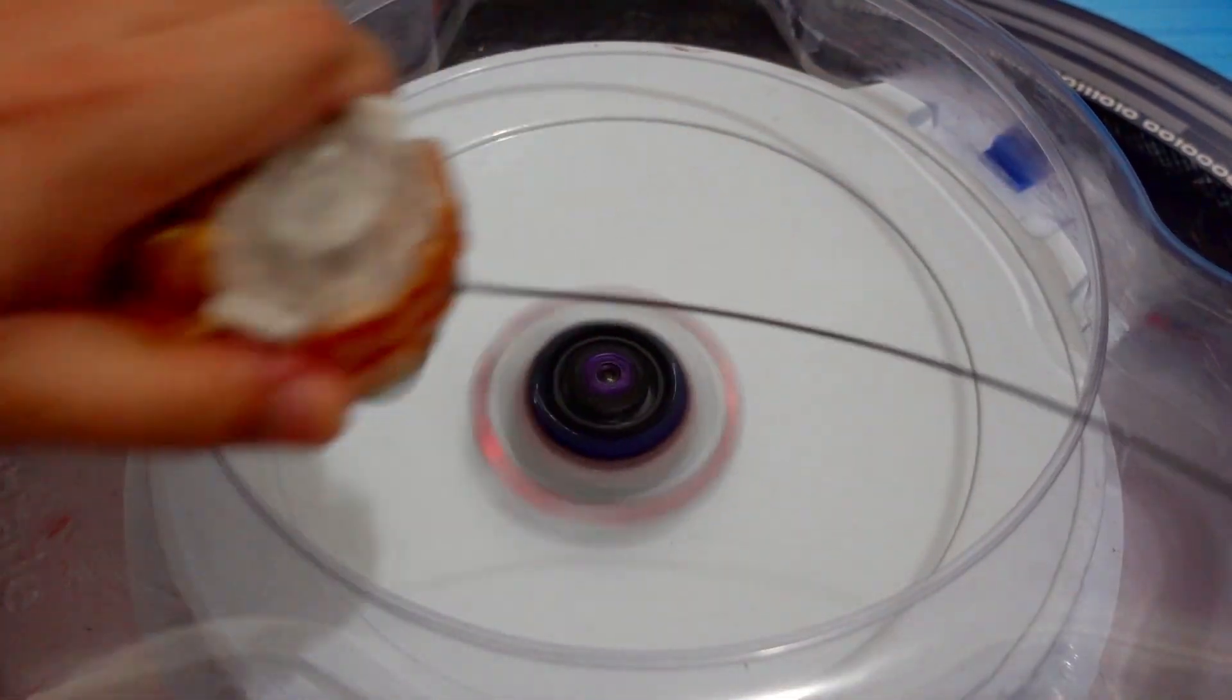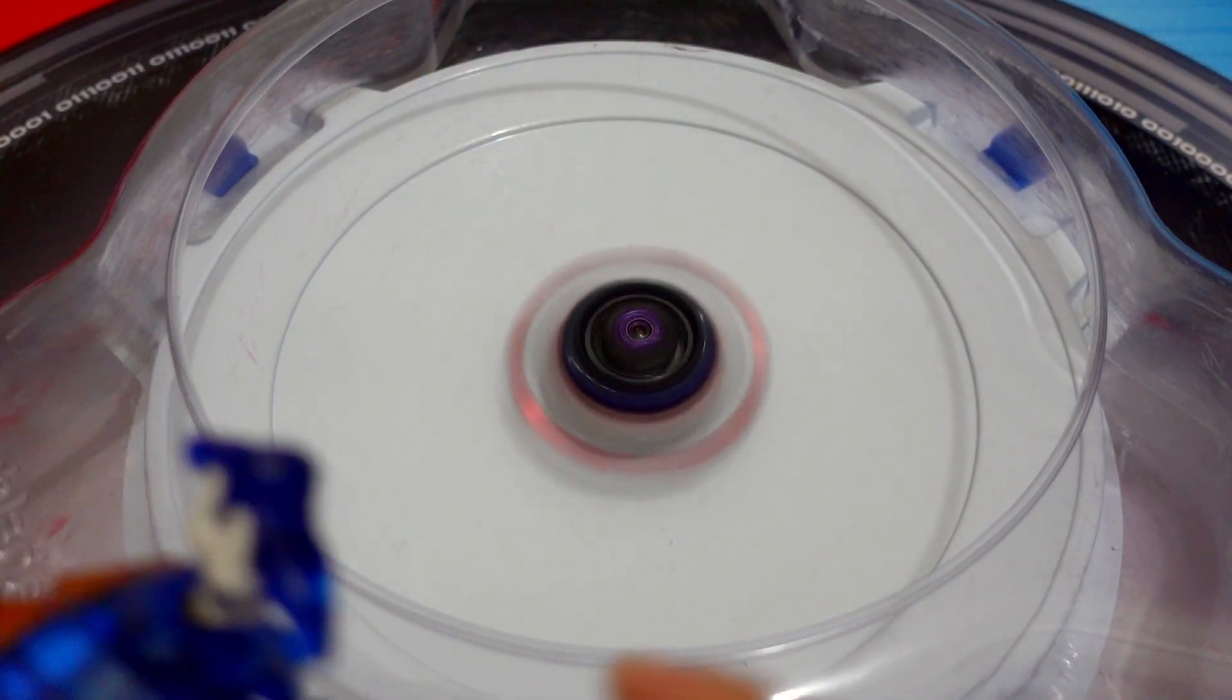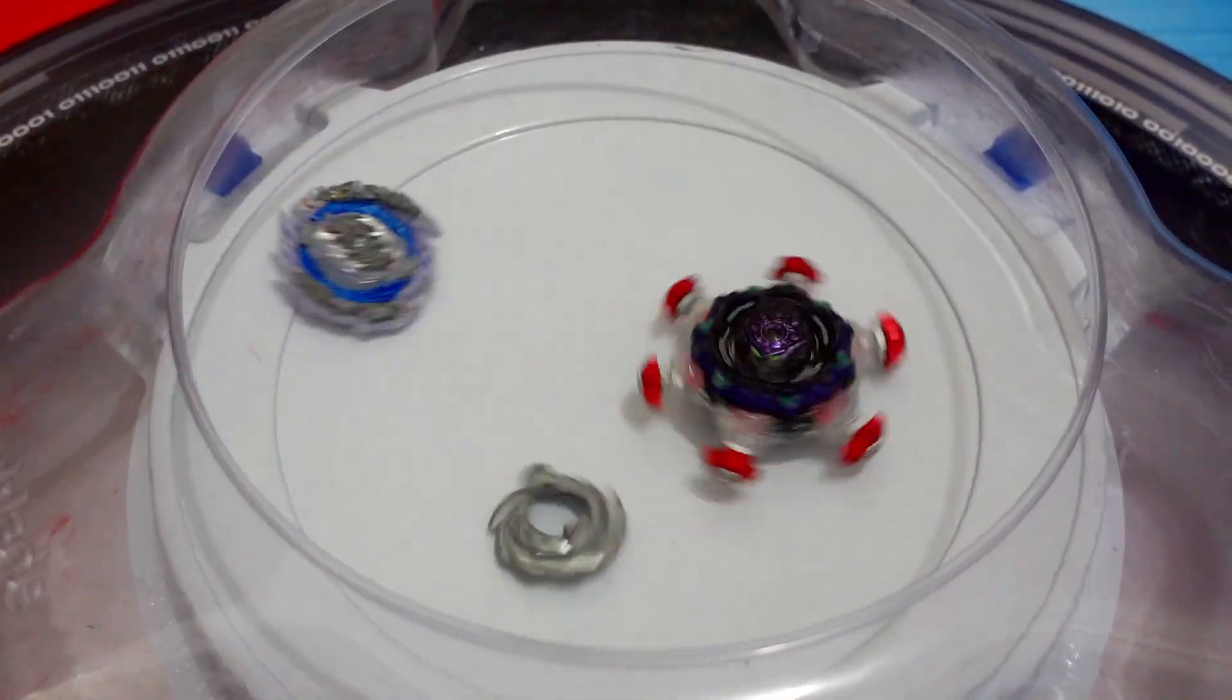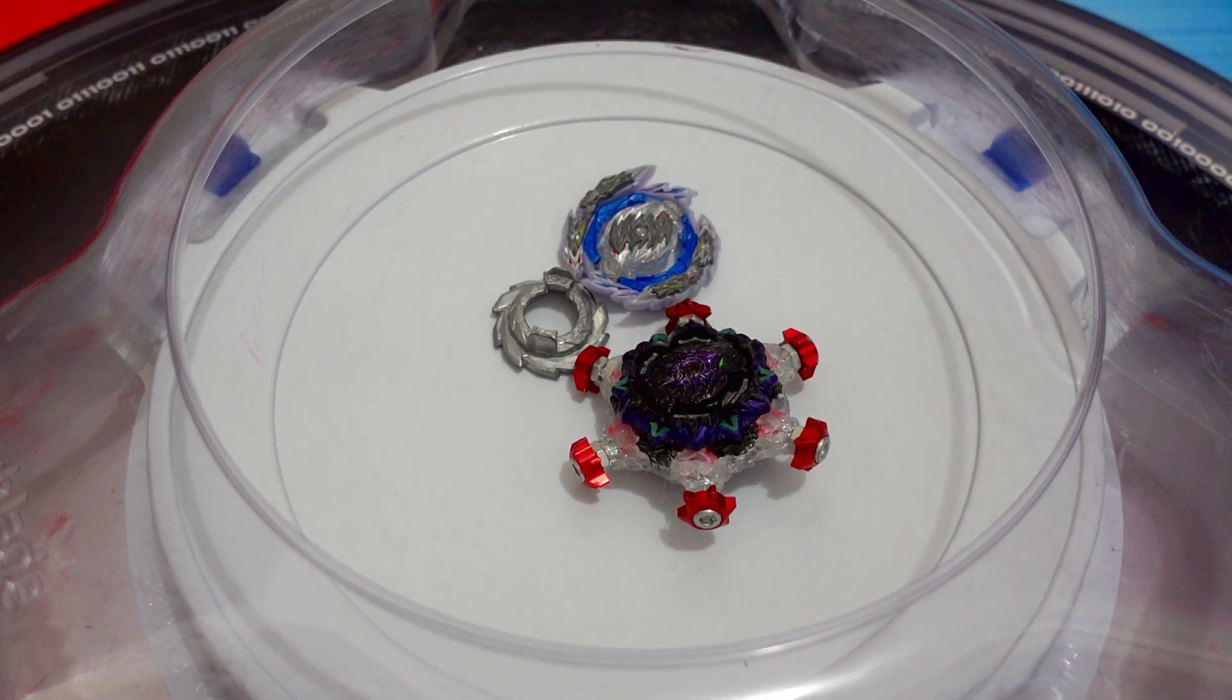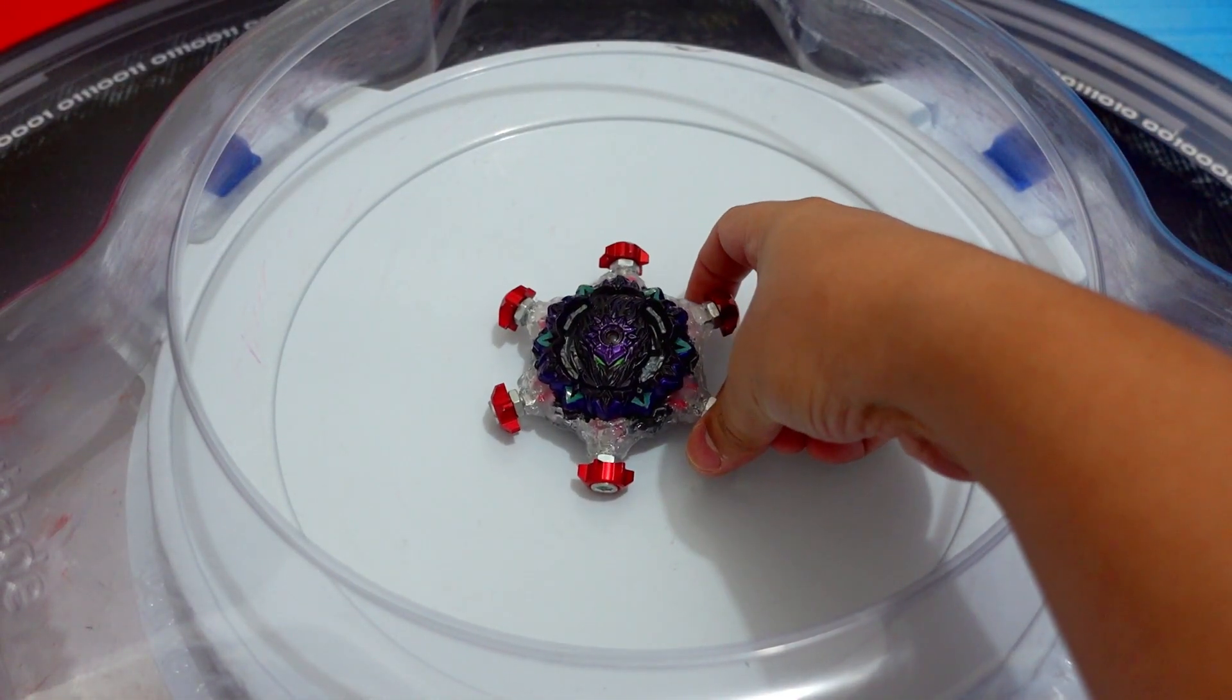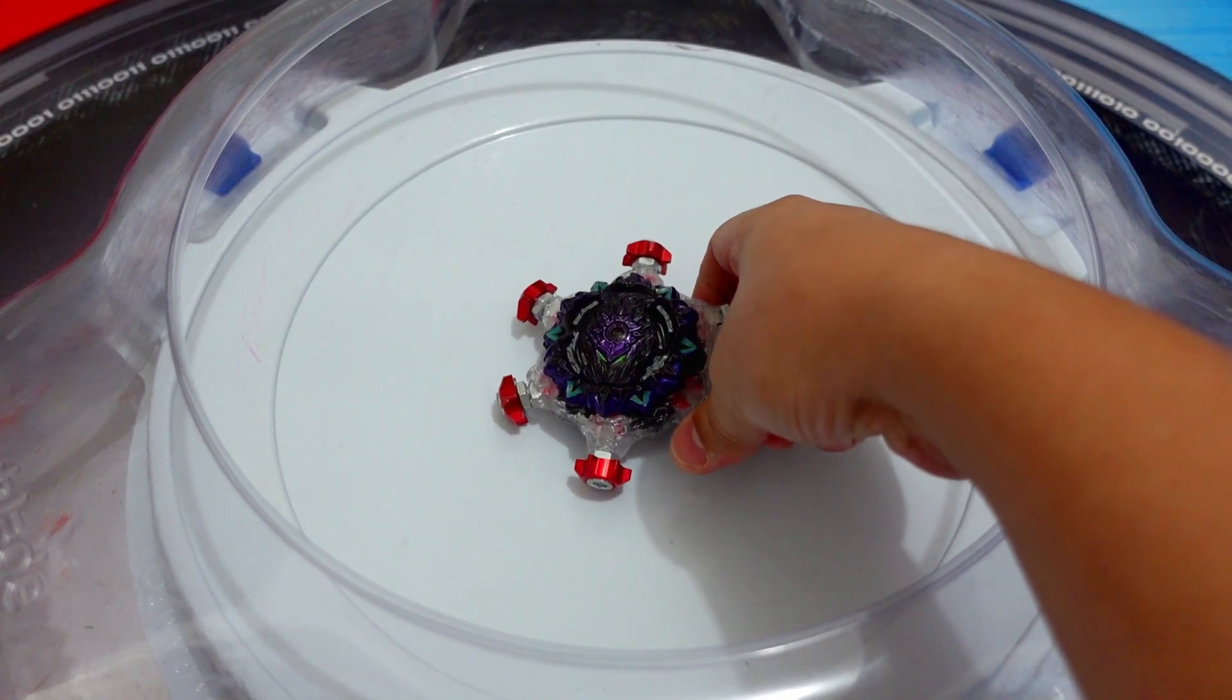Okay, ready? 3-0, right? Here's the Guilty Longinus. Oh, burst! Oh my god, that was a burst finish. Winner is our Metal Barrier Variant Lucifer Beyblade Mode. That's already 4-0.